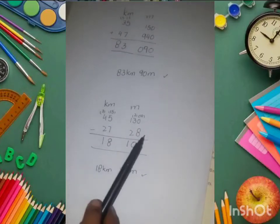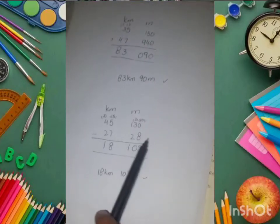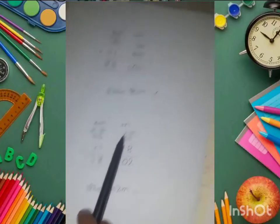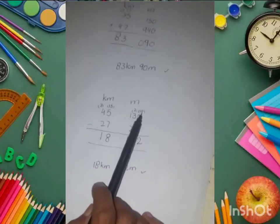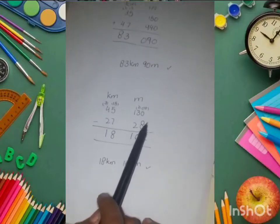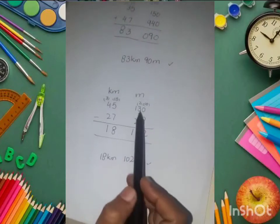We cannot subtract 8 from 0, so we borrow 1 and make it 10. Now we subtract: 10 minus 8 equals 2. 2 minus 2 equals 0.